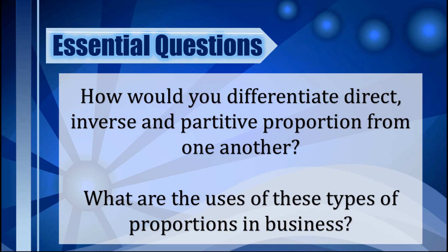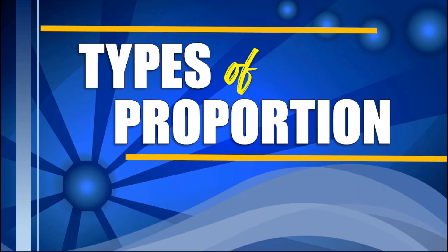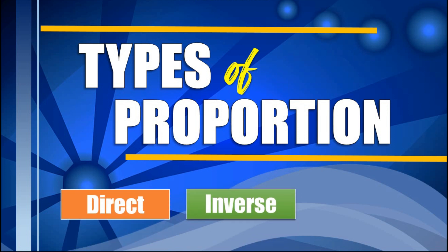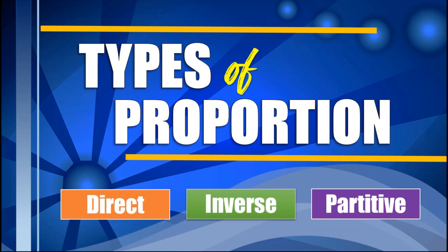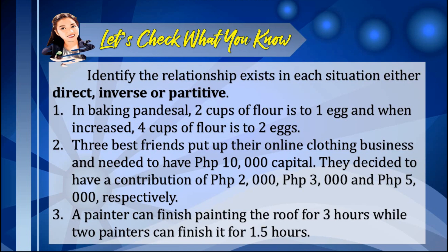What are the different types of proportions? We have direct, inverse, and partitive proportions. Now let us first check what you know about proportion. Identify the relationship that exists in each situation — either direct, inverse, or partitive. You may pause the video so you can answer these items.